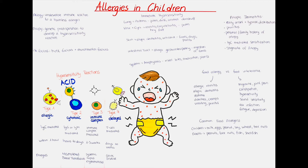For a hypersensitivity reaction to occur, the host, in this case a child, has to encounter the allergen for the first time. This is called presensitization. There are four types of hypersensitivity reactions based on the mechanisms involved and the time it takes for the reaction to occur. It is possible for several types to occur in one disease.